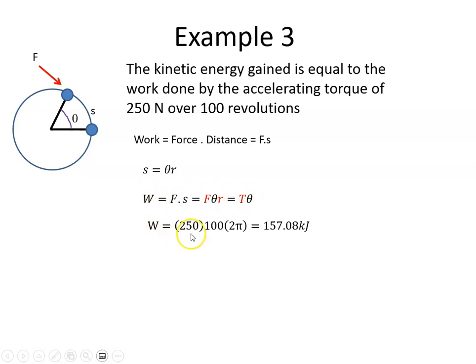We're told the torque is 250 Nm and the revolutions is 100. The angle theta is in radians. If I've done 100 revolutions, there's 2π radians per revolution, so it's 2π times 100. When I calculate 250 times 100 times 2π, I get 157.08 kJ. That was the first part of the question.